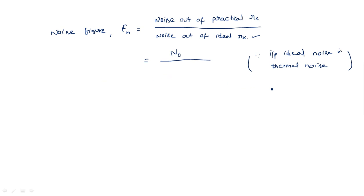Thermal noise is given as KT₀BN. This is the relation between the previous video and this video — in the previous video I explained thermal noise, and now we bring it here into the noise figure. Thermal noise KT₀BN represents ideal noise: when the receiver operates in a noise-free environment and no noise enters the antenna terminals, thermal noise is still present.